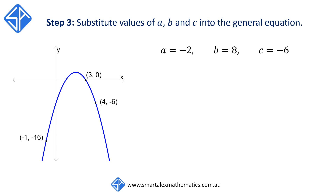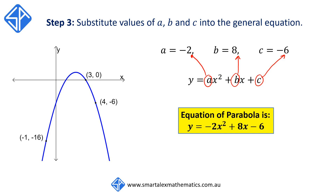Now that we've solved for the values of a, b, and c, we substitute these values back into the general equation to find the equation of the parabola. Replacing a with negative 2, b with 8, and c with negative 6, the equation of this parabola is y is equal to minus 2x squared plus 8x minus 6.